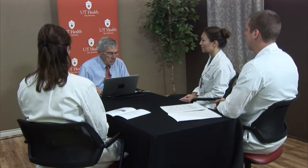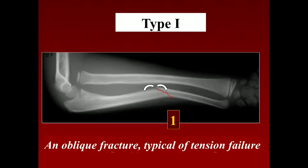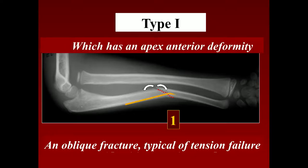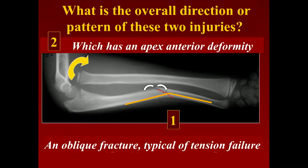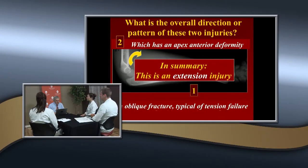It's really a tension fracture — it failed in tension. It's a bending force, and it failed on the tension side and remained intact on the other. We call these green stick fractures. The apex is anterior, and the radial head goes anterior as well. The overall direction pattern of these two injuries is anterior — it's an extension type of injury pattern.